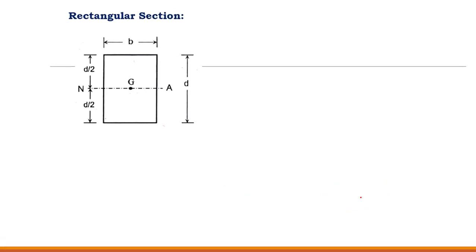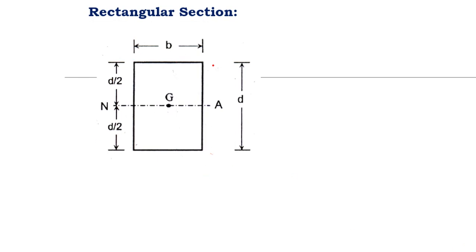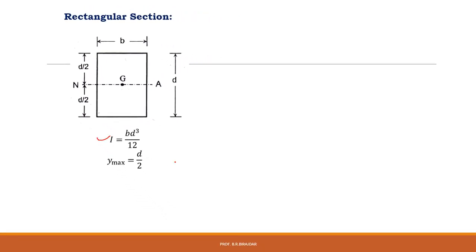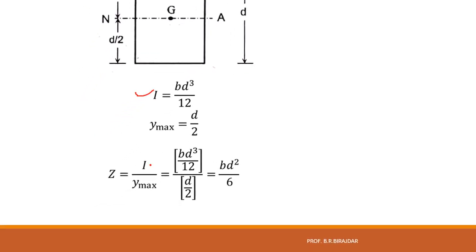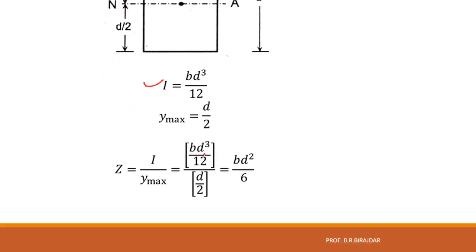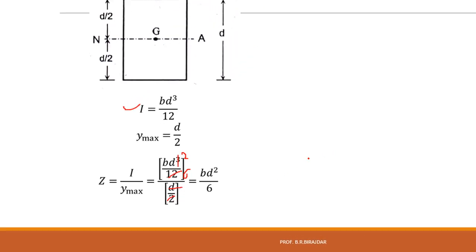For the rectangular section with width b and depth d, the neutral axis lies at the center. The distance from the neutral axis to the outermost layer is d/2, both top and bottom. The moment of inertia is bd³/12 and y_max is d/2. So the section modulus Z = I/y_max = (bd³/12)/(d/2). The 2 cancels the 12 to give 6, resulting in Z = bd²/6.